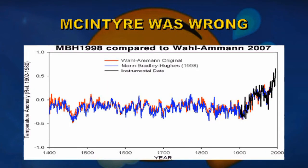Here is a comparison of the Mann result shown in blue with a subsequent analysis by Wall et al. using the statistical methods suggested by McIntyre, and it's really hard to see very much difference between those two sets of results.